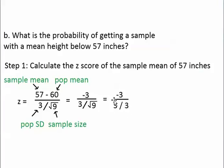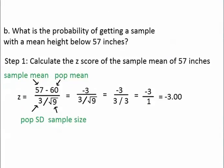So we're going to be dividing 3 by 3 on the bottom. 3 divided by 3 is 1. That's why we have 1 on the bottom. Now we just divide the top number by the bottom number. Negative 3 divided by 1 equals negative 3.